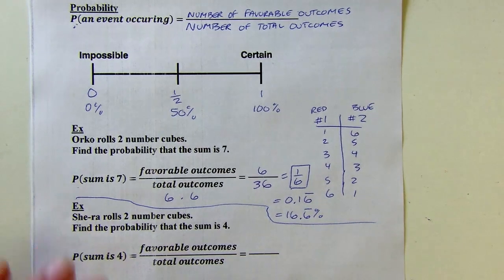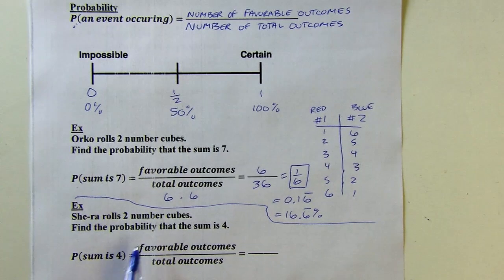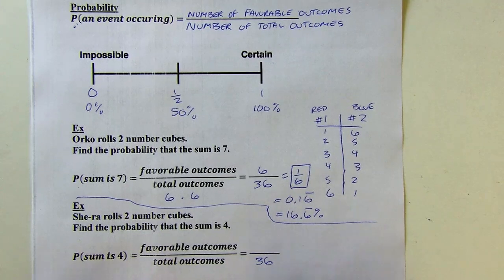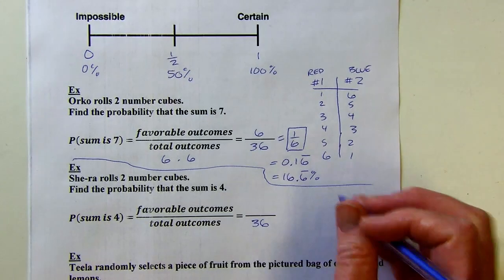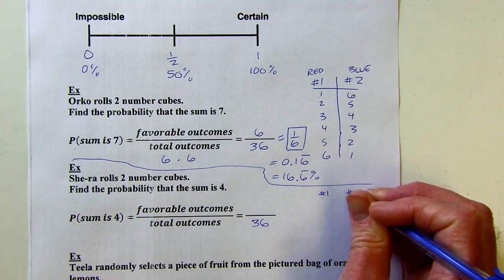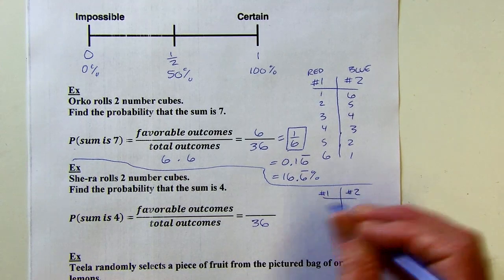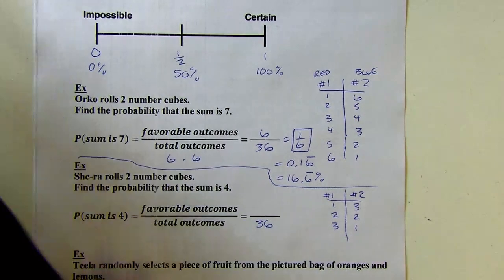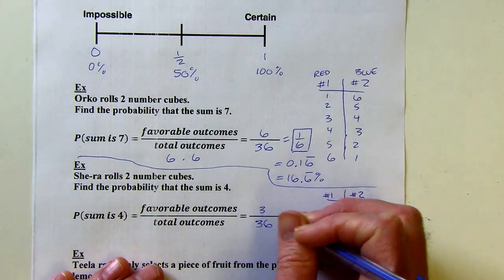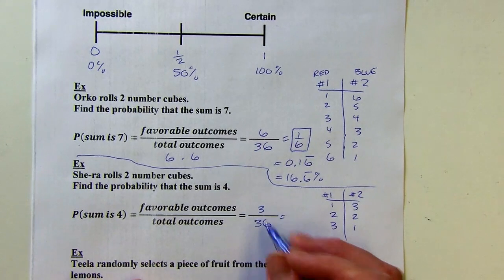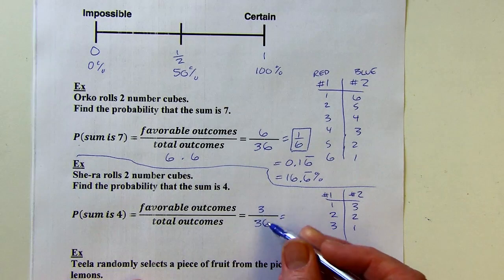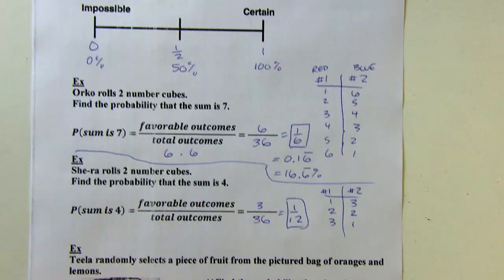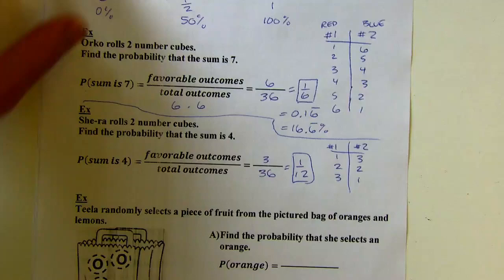She-Ra rolls two number cubes, and we'll find the probability that the sum is 4. Just like the last problem, there are 36 total outcomes. For the favorable outcomes, I need a sum of 4: a 1 and a 3 will work, or a 2 and a 2, or a 3 and a 1 — and that's it. That gives 3 favorable outcomes, so 3/36 reduces to 1/12.